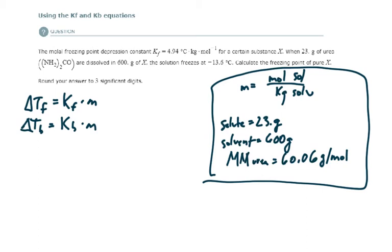All right, so we have another example here using the Kf and Kb equations. This is going to be the molal boiling point elevation constant, and this is the molal freezing point depression constant.